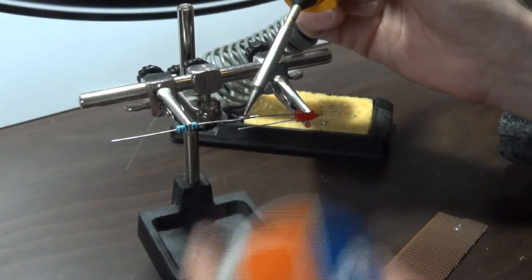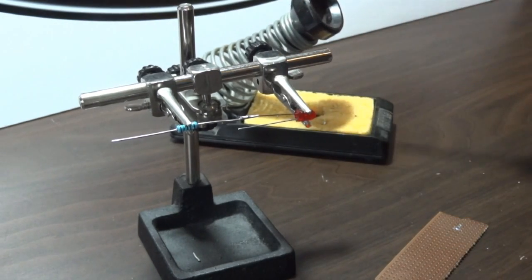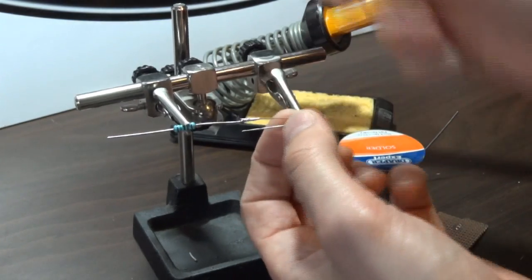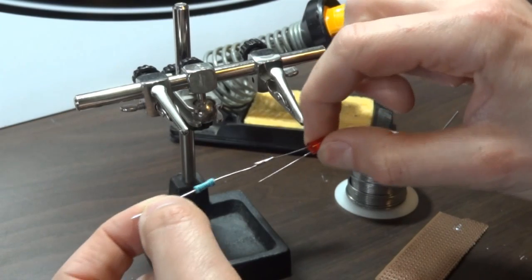So the iron on, solder on, solder off, and iron off. And that should make a nice joint there. Once it's cooled, that should be a nice strong mechanical joint.